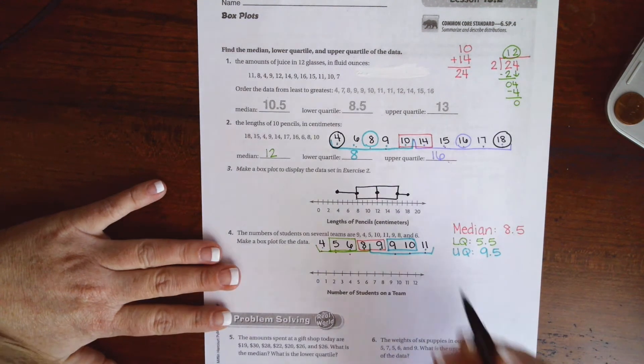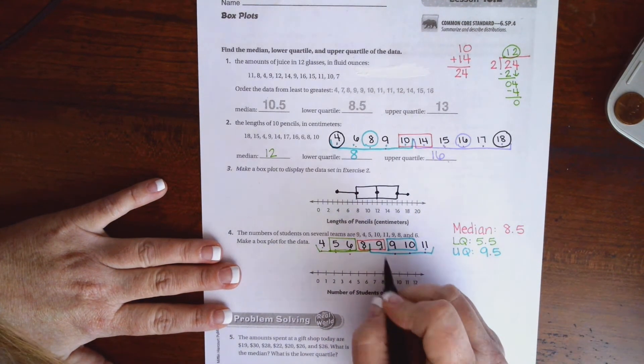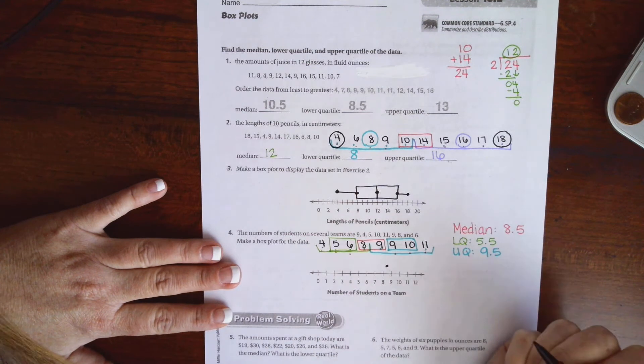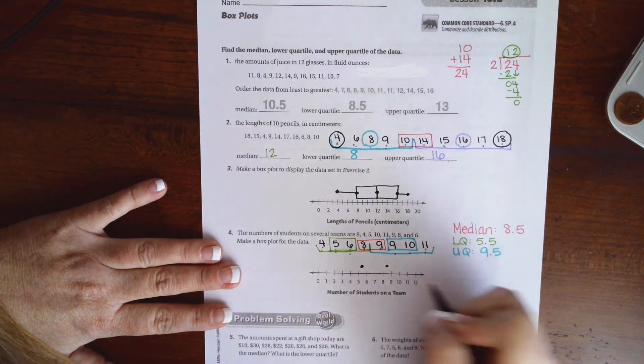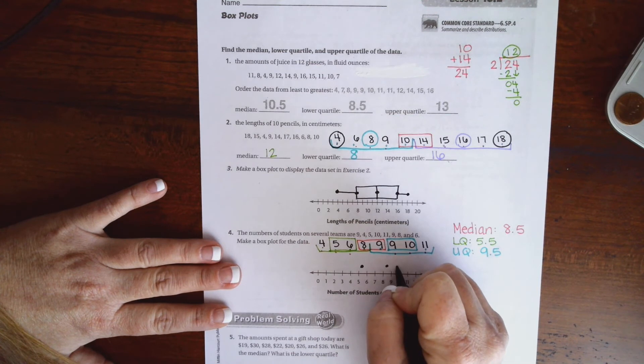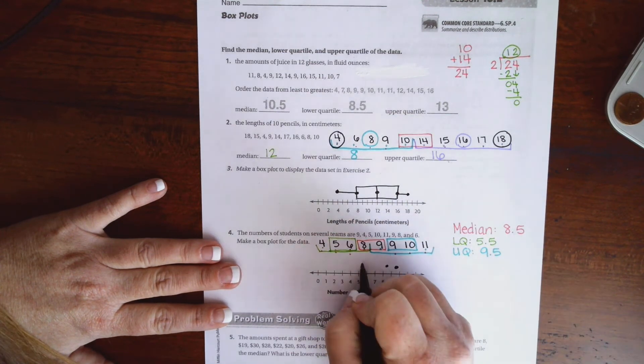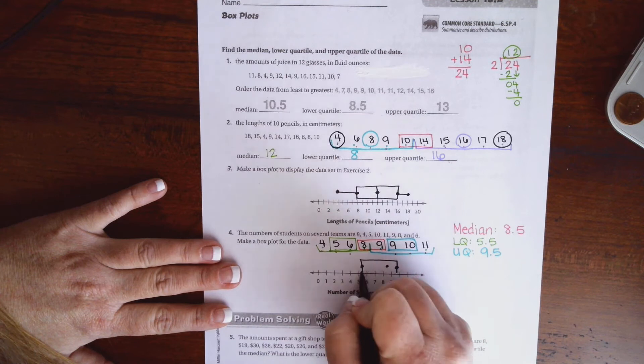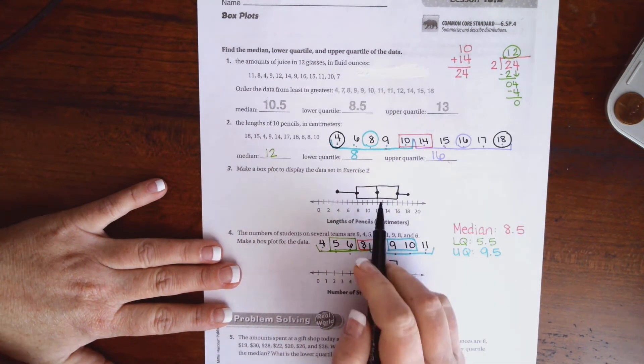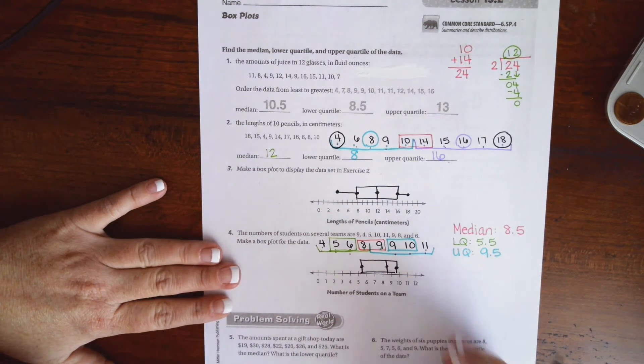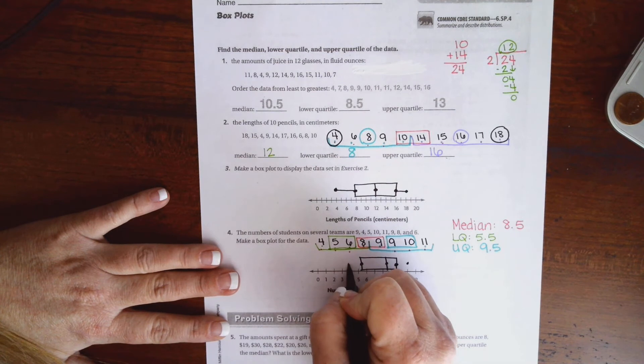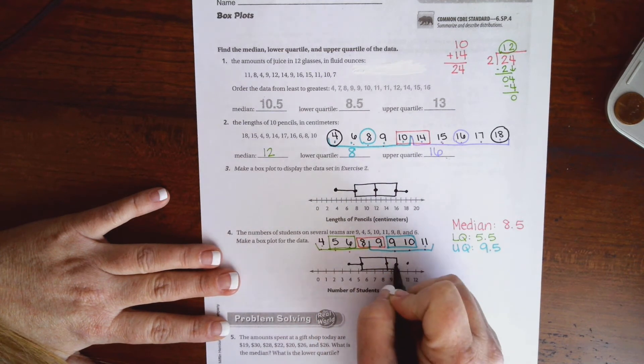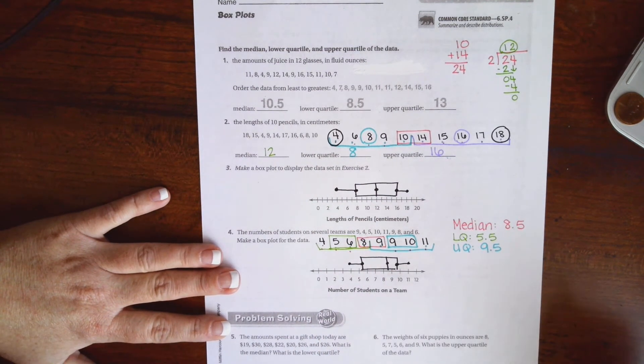So now I'm just translating that to my line graph. I have 8 and a half, right in the middle of 8 and 9. I have 5 and a half, right in the middle of 5 and 6. I have 9 and a half. So now I'm just going to draw my box. They don't always look perfect, kind of like that one does. Now the highest number I have here is an 11, and the lowest number I have here is a 4. So I'm just going to connect with my whiskers. That's it, guys.